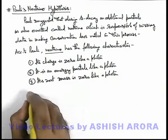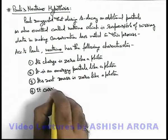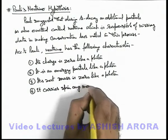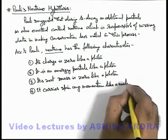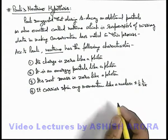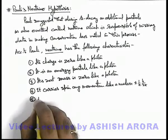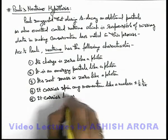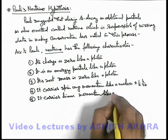But the unlike characteristic it has from a photon is that it carries a spin angular momentum like a nucleon, which is plus or minus half h over 2π, because it is produced from within the nucleus. And a similar characteristic with the photon is that it carries linear momentum.